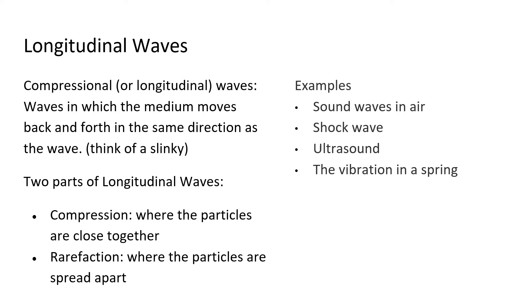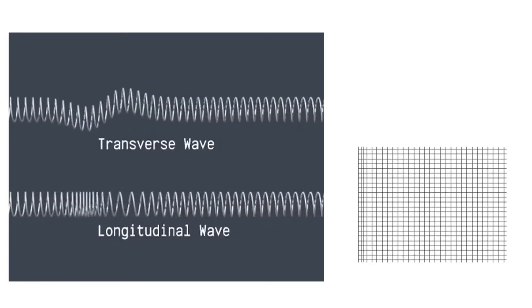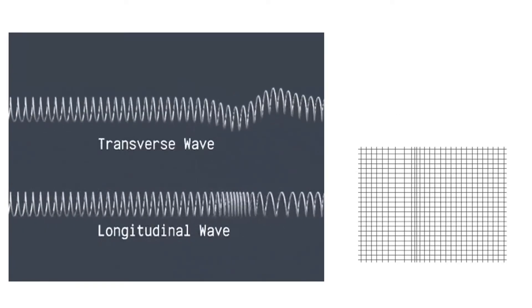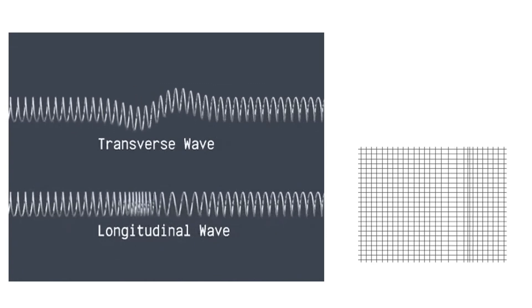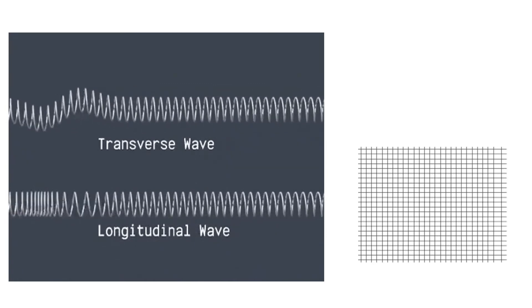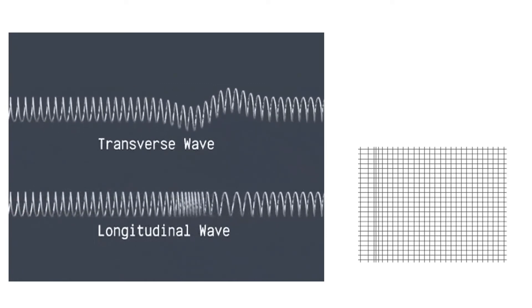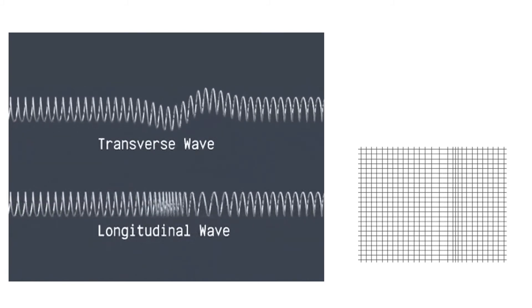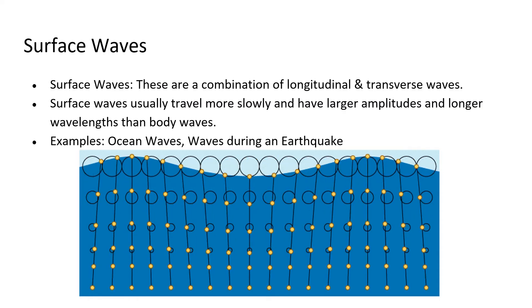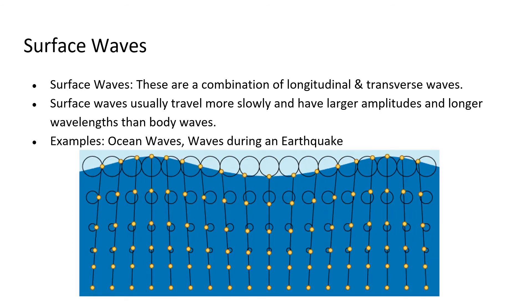Again, longitudinal waves versus transverse waves. The longitudinal has compressions moving along, and when it spreads out that's the rarefaction. Surface waves are a combination of longitudinal and transverse waves.